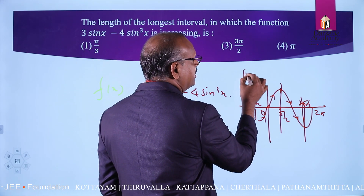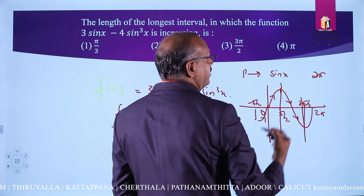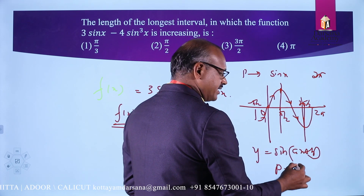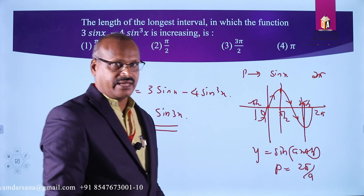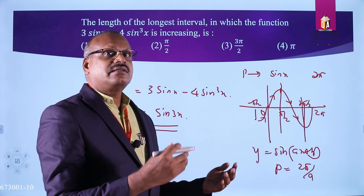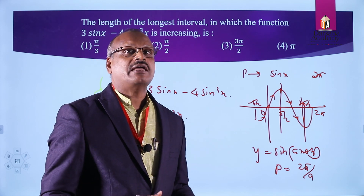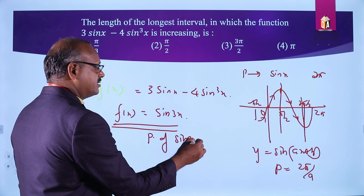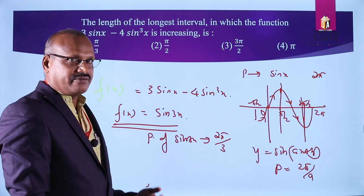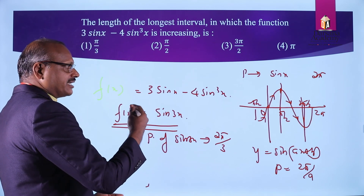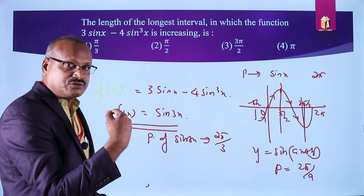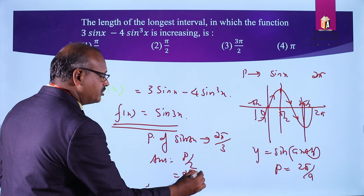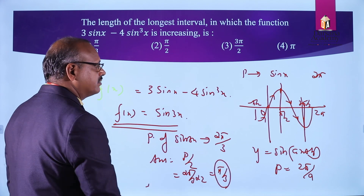The period of sinx is 2π. The period of sin(ax + b) is 2π divided by a. So the period of sin3x is 2π/3, which is 120 degrees. The maximum width of the interval in which the function is continuously increasing or decreasing equals period divided by 2, which is 2π/3 ÷ 2 = π/3. So π/3 is our answer.